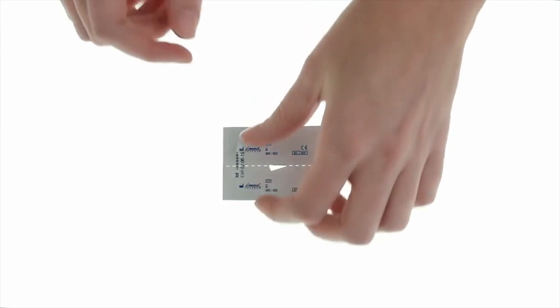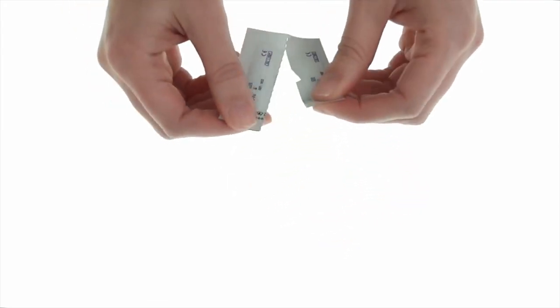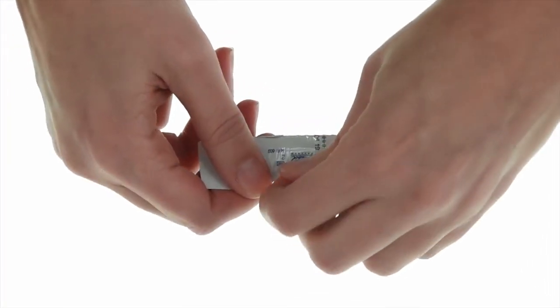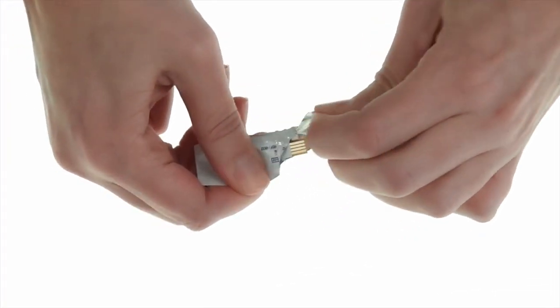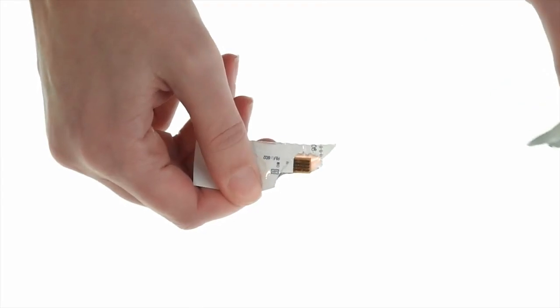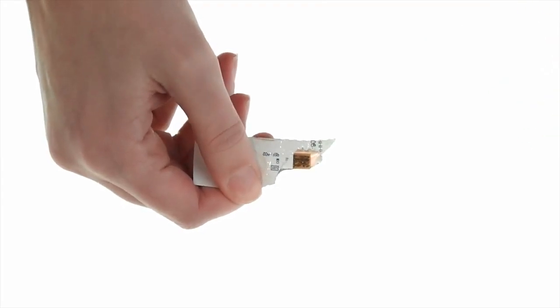To start, remove one single-use sensor from its packaging. Tear along the dotted line to separate one of the attached wrapped sensors. Grasp the bottom of the package firmly with one hand and carefully tear in the direction of the pre-cut section to expose the end of the sensor to be inserted into the iPen device.